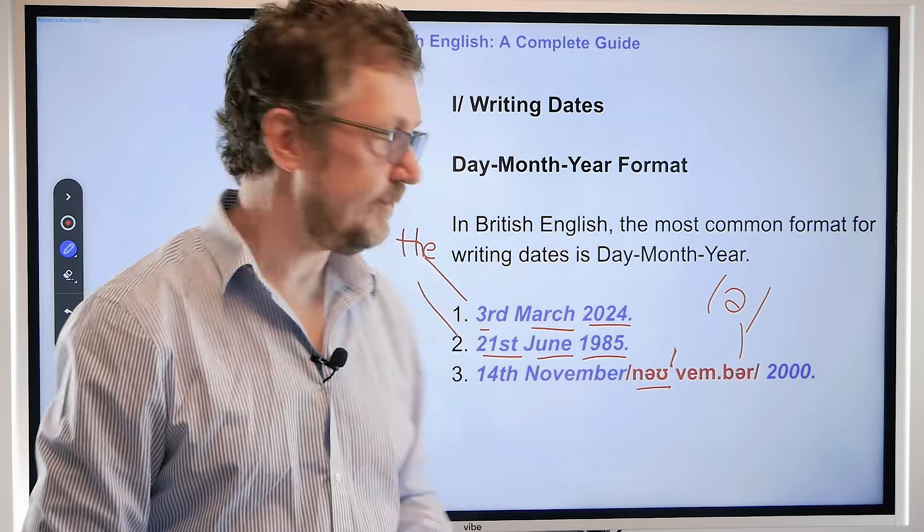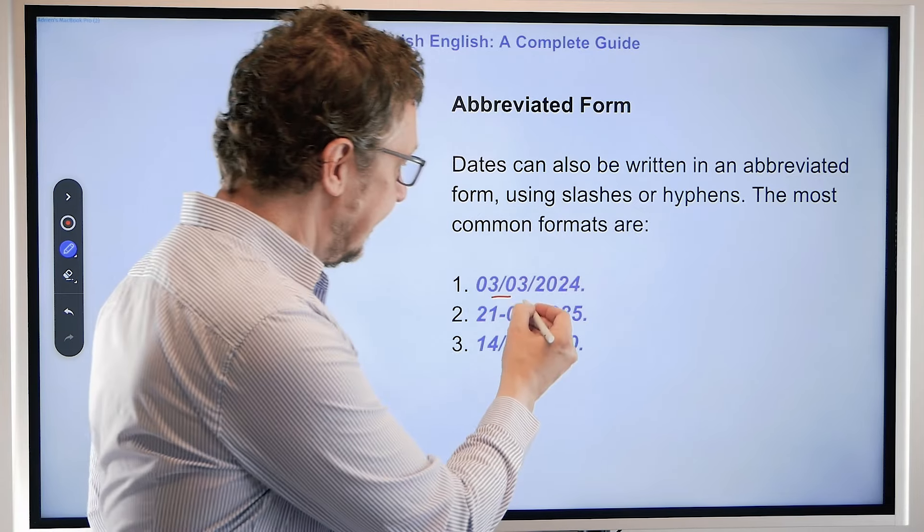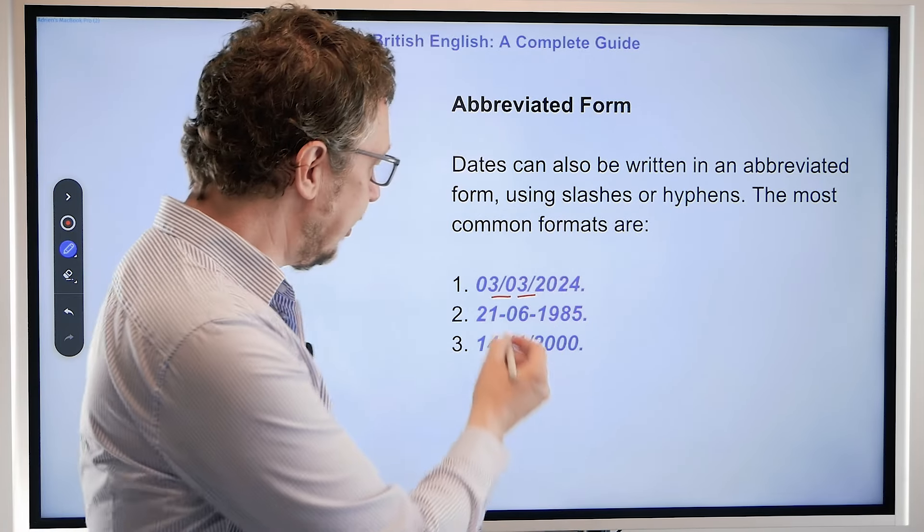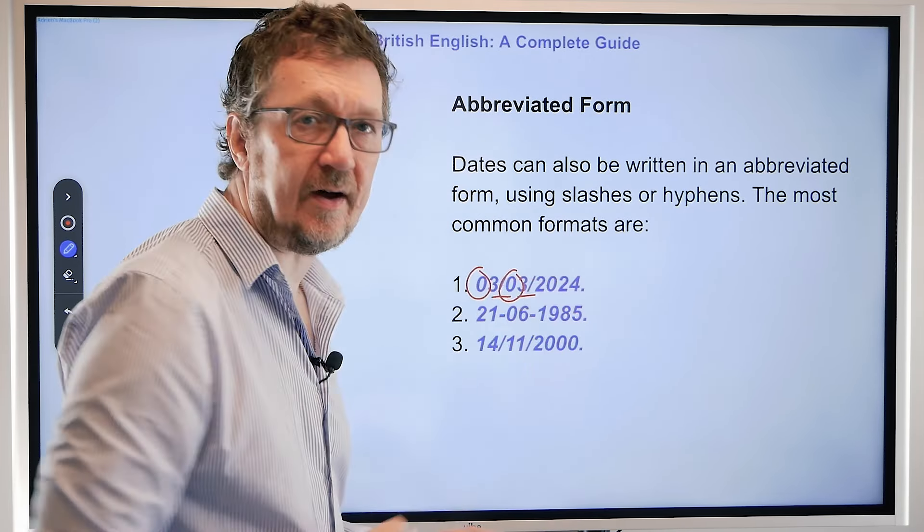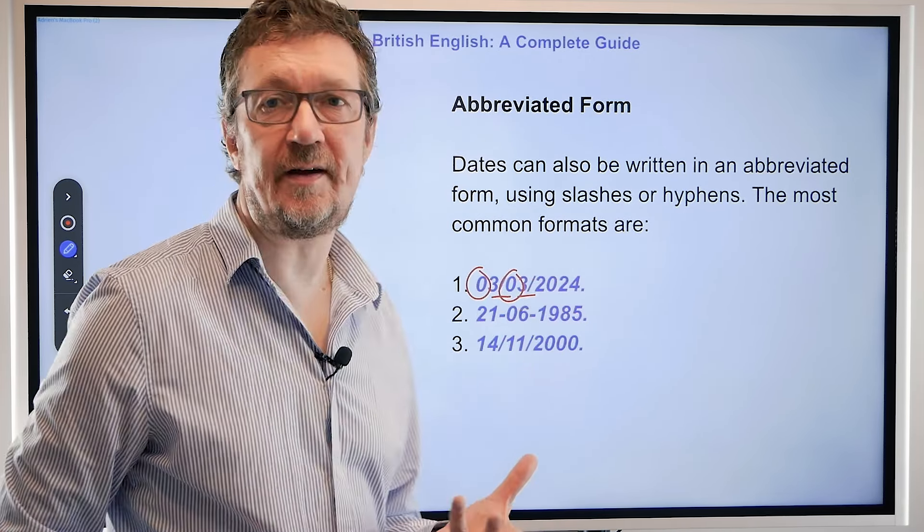Dates can also be written in an abbreviated form, and in fact this is how you'll find it on the internet. When you're filling in forms and when you're doing something official, you'll be expected to use this forward slash. We always use the zero if it's under 10, and we always use the forward slash on internet applications. The expected format has two figures, two figures, and then four figures. So for example, if it's March, you will need to do 03.